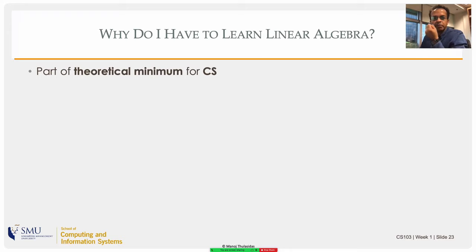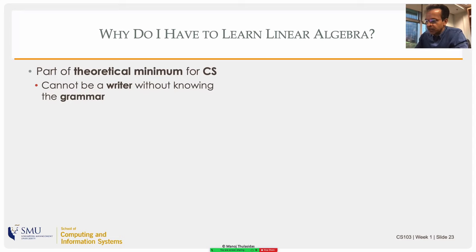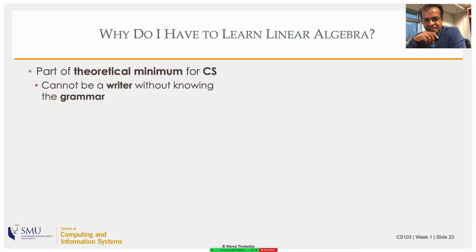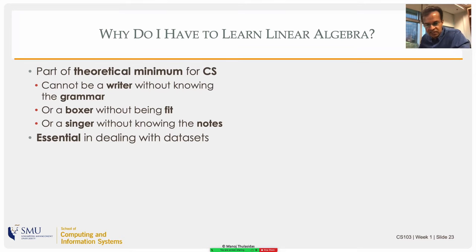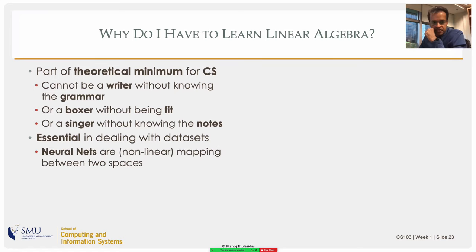Linear algebra really is the theoretical or mathematical minimum you need to be a good computer scientist. Just as you need words, grammar, sentences, and punctuation to be a good writer, you cannot be a good computer scientist without the theoretical minimum. Data sets are basically huge matrices — it is not humanly possible to look at the numbers and come up with anything sensible. We write machine learning programs that make sense of the data, and those use linear algebra.